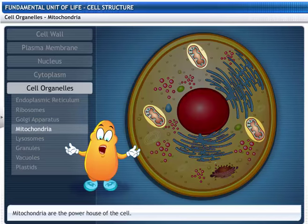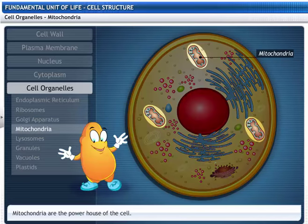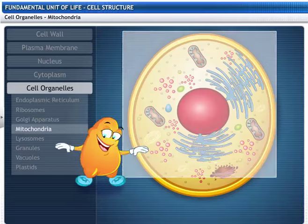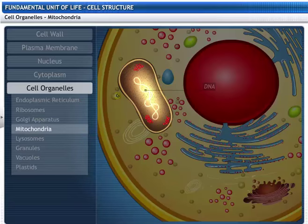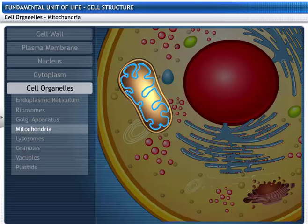This is the powerhouse of the cell, called mitochondria. They have their own DNA and ribosomes to synthesize respiratory enzymes. These enzymes oxidize glucose molecules to produce energy in the form of adenosine triphosphate or ATP. This energy is used for chemical activities and mechanical work.